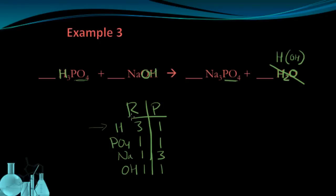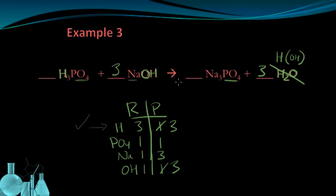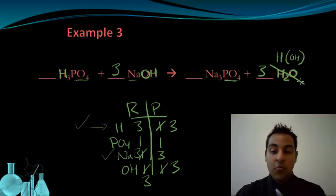I'm going to start by balancing the hydrogens. I need to multiply the product side hydrogens by three — those are over here where the water used to be, so I'm going to put a three in front of that. That's going to change my hydrogens on the product side to three, but it also changes the hydroxides on the product side to three. So hydrogen is okay and phosphate is already okay. Now let's look at sodium: sodium has three on the product side, so I need three on the reactant side. I'm going to multiply this compound by three, which gives me three sodiums on the left as well as three hydroxides. Once I make this change, everything is now balanced. It's really only beneficial to break up this water into hydrogen and hydroxide if you see hydrogen and hydroxide on the reactant side.